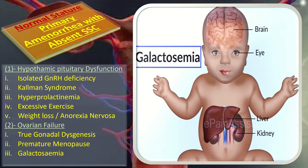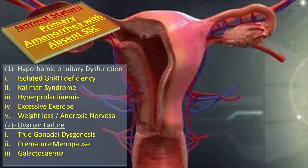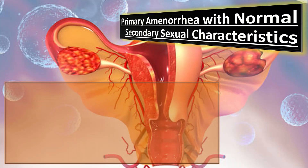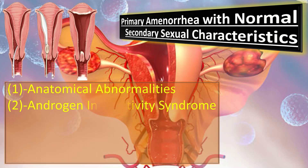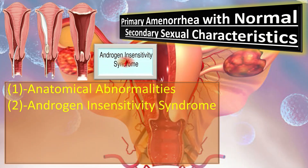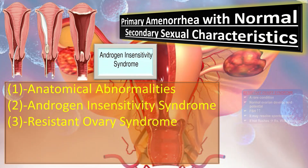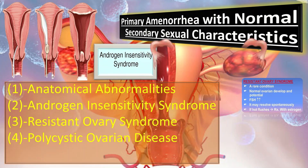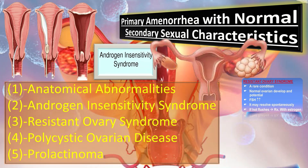Now we are going to discuss primary amenorrhea with normal secondary sexual characteristics, and that includes anatomical abnormalities, androgen insensitivity syndrome, resistant ovary syndrome, polycystic ovarian disease, and prolactinoma.